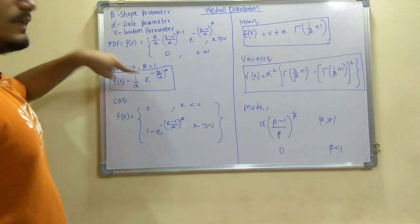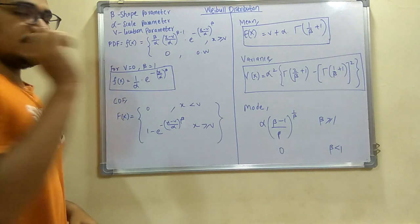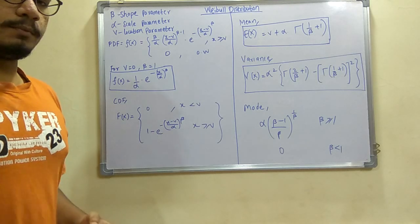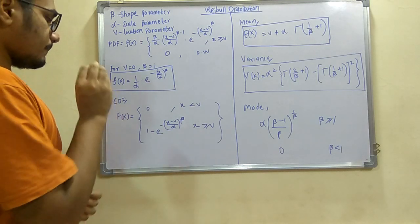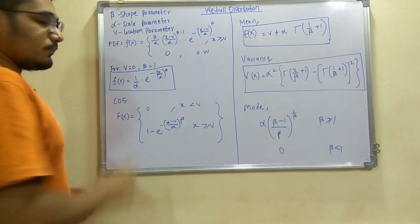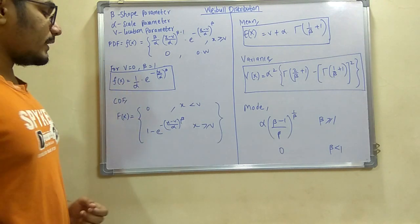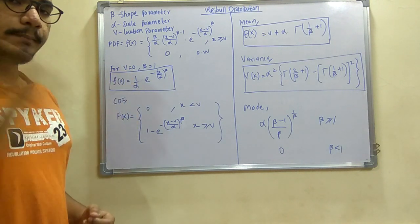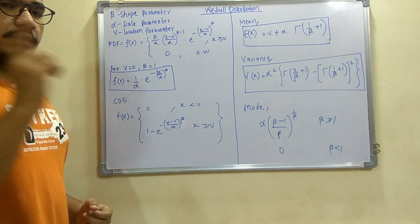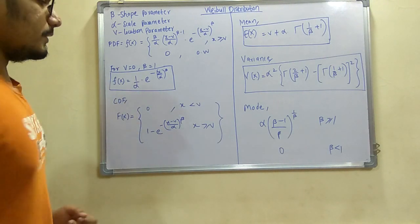Next we will be having the CDF, that is capital F(x), which we will be using for solving most of the problems on Weibull distribution. So it is 0 if x is less than V, and the main formula which we'll be using throughout: it is 1 minus e raised to minus ((x minus V) divided by alpha) whole raised to beta. The condition is that x is greater than or equal to V. So this is the CDF.